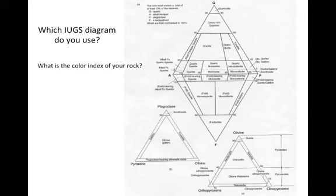First, you can assess what the color index of your rock is. The rock that we just looked at, we estimated about 15% dark minerals, the hornblende and the biotite. That's not very much. It's a relatively low color index and puts us in the ballpark of a felsic or intermediate rock.